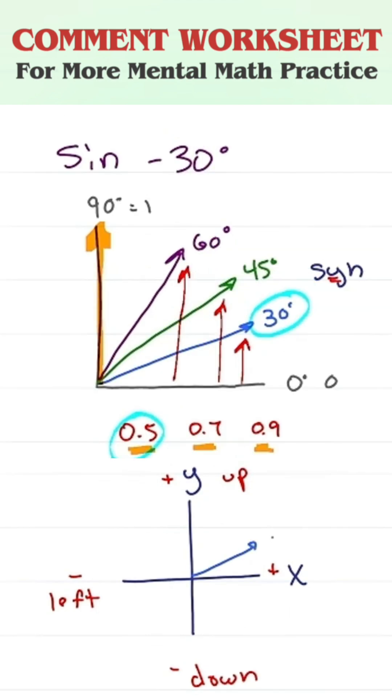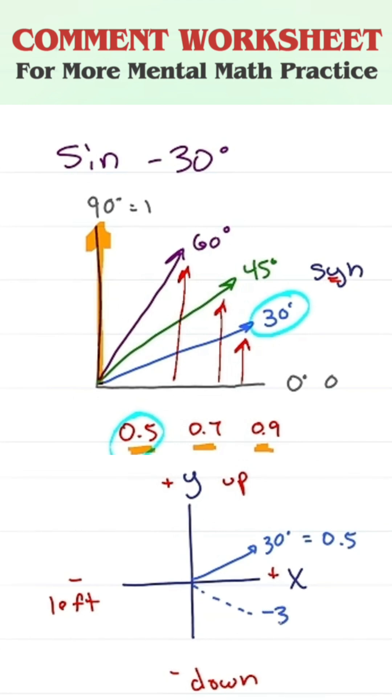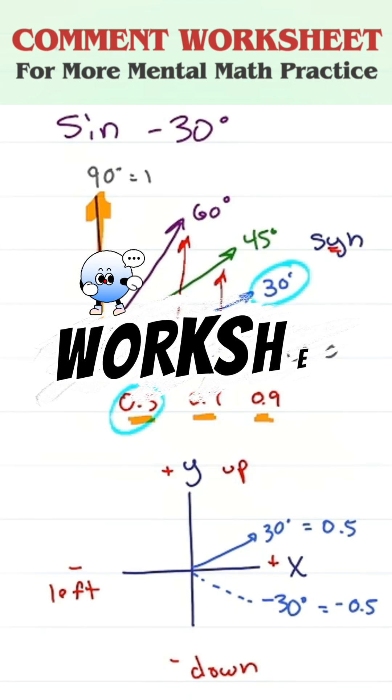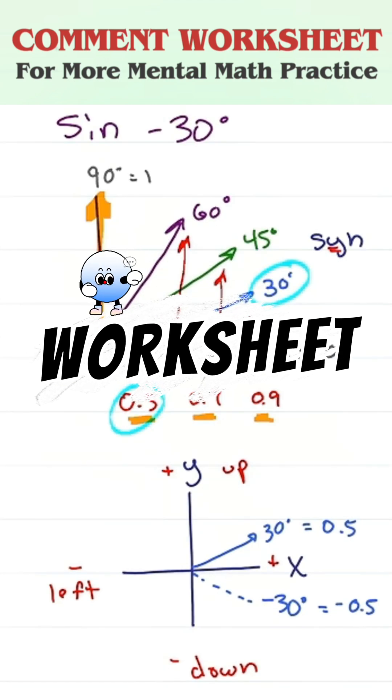And so if 30 degrees is 0.5, then 30 degrees down should be 0.5 down, or negative 0.5. Comment worksheet for dozens more no calculator math shortcut practice.